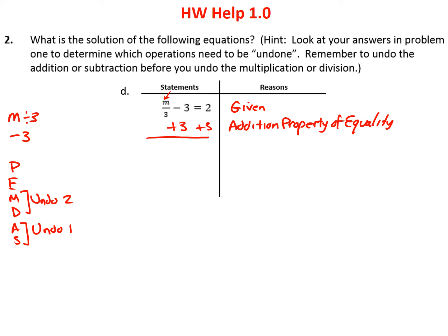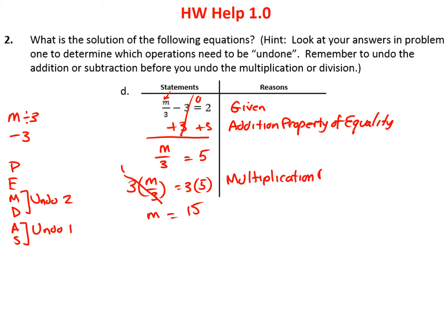Starting with the given, we have division and subtraction. We undo subtraction first — the opposite of subtracting 3 is adding 3. Whatever we do to one side we have to do to the other, and that property is called the addition property of equality. Minus 3 and plus 3 add up to 0, so we're left with m over 3 on this side, and 2 plus 3 is 5. Now one operation is eliminated.